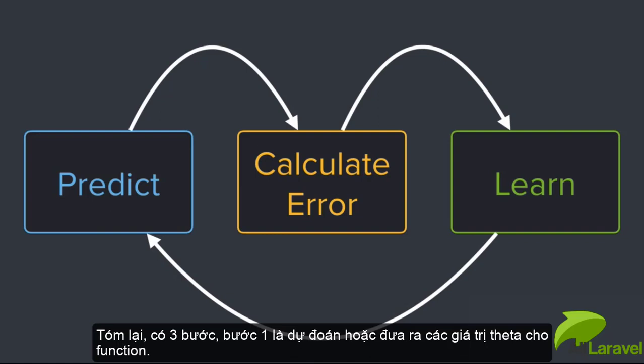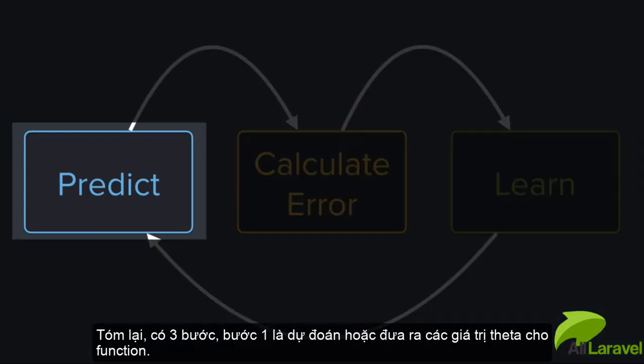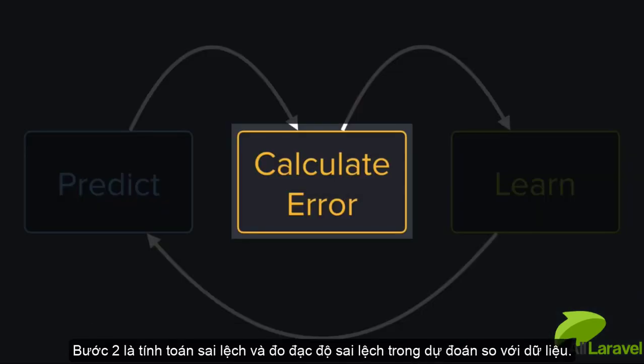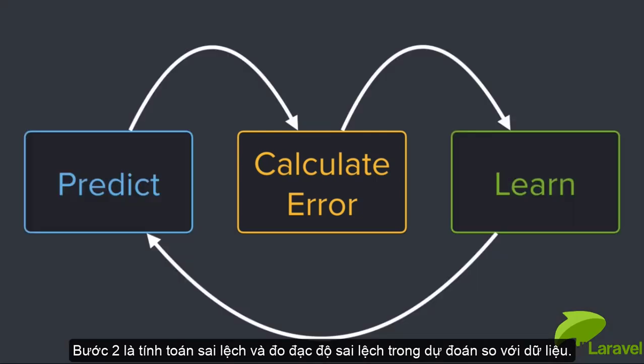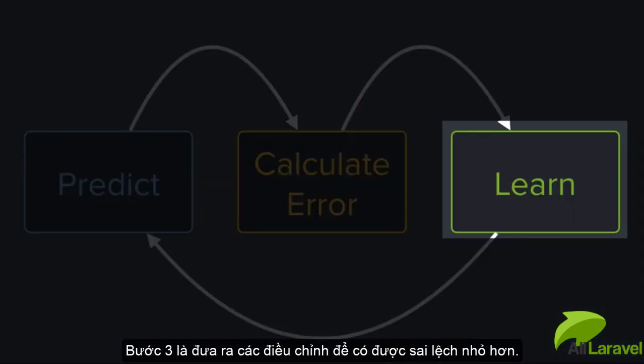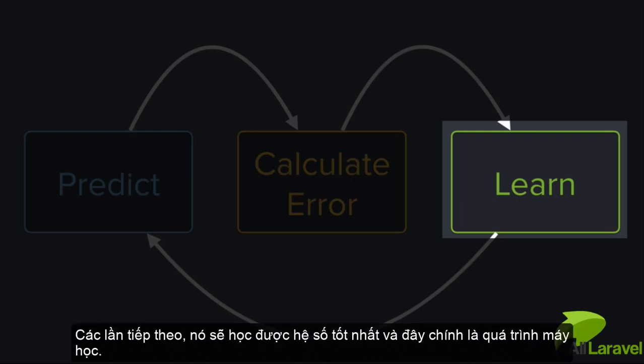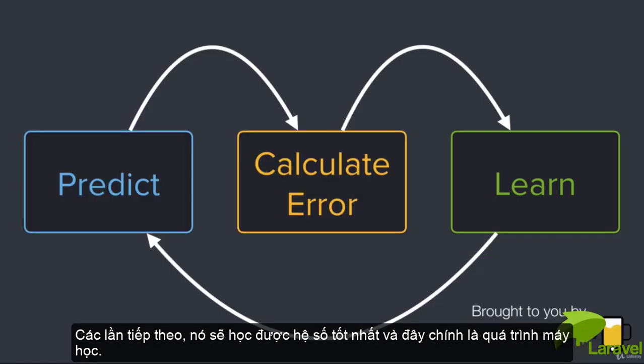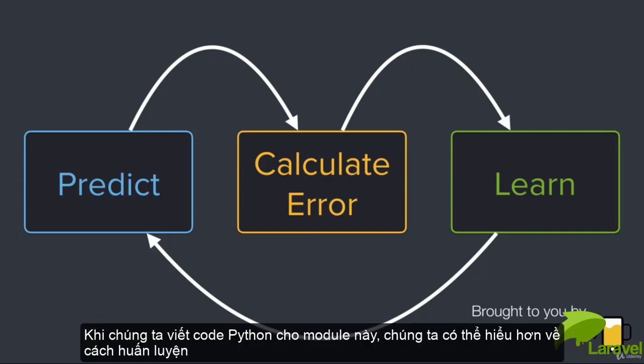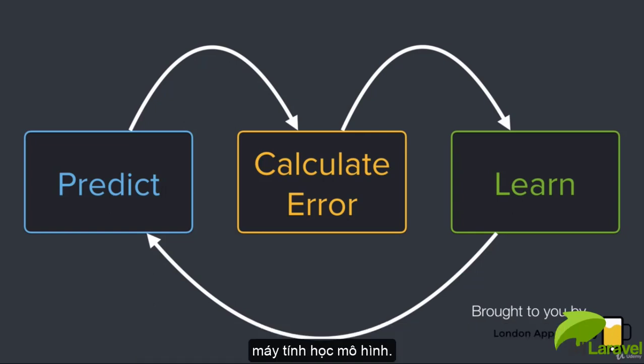So in summary, there are three steps. Number one is predict or infer the theta values of the function. Number two is calculate the error and measure how far off we were in our prediction function from the data. And step three is making an adjustment to have a smaller error the next time around and slowly learn the best coefficients. And this is the learning process. When we're writing our Python code in this module, this is how we can think about training our machine learning model.